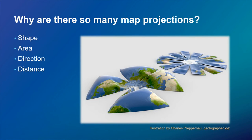Why are there so many map projections? When you try to flatten an ellipsoidal or spherical surface, you can't do it without tearing or crushing it. You end up distorting shape, distance, area, or direction.